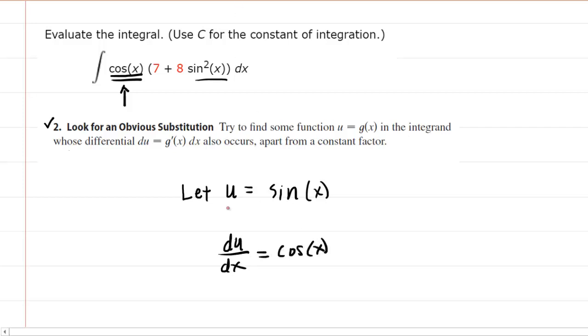What I like to do is solve for dx whenever I do these u-substitutions. So I'm going to multiply both sides of this equation by dx so that it cancels out on the left side. Then, to solve for dx, I will divide both sides by cos(x). The cos(x) terms will cancel out on the right side, leaving me with my expression for dx.